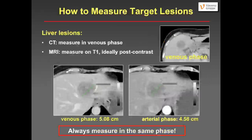It's very important to measure target lesions accurately and reproducibly. If you use CT, always measure in the venous phase. If you take MRI, measure on T1-weighted images, ideally post-contrast. Always measure in the same phase and do not use the arterial phase. Comparing measurements in the venous and arterial phase shows at least a 10% difference between them. Always measure in the same phase — this should be the venous phase.